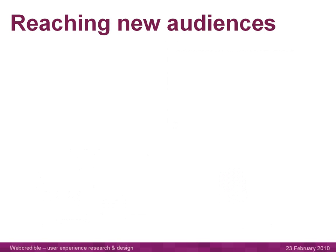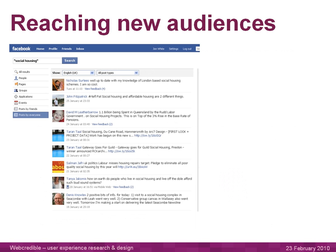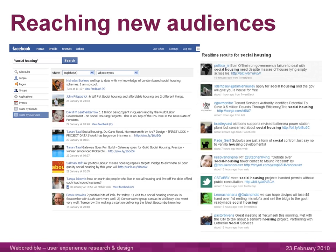Reaching new audiences: both Facebook and Twitter have search functions. On screen now are examples of a real-time search on both Twitter and Facebook for the term 'social housing.' To reach new audiences, you can find people who are talking about this and decide accordingly whether and how to engage them.